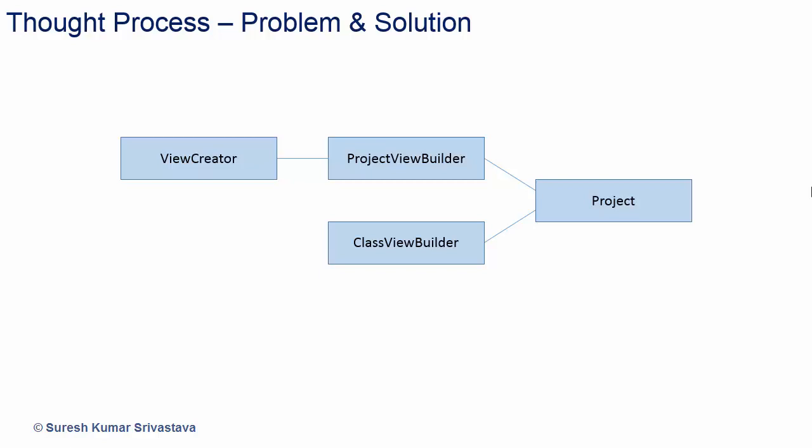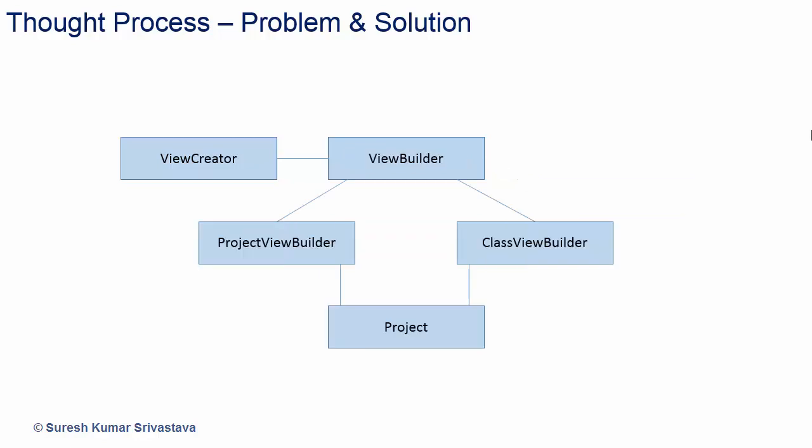But then view creator will require to know about project view builder, class view builder, and it will become complex to add new builders. So we will have a view builder interface and view creator will just use it in the construction logic. The project view builder and class view builder will be derived from view builder and will implement its interfaces to build the parts of object and assemble all the parts to create different representations of the project object. Now this looks good as we can just add another builder class if one more different view is required.